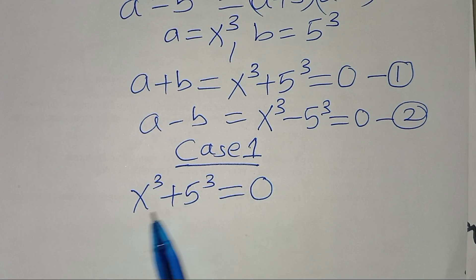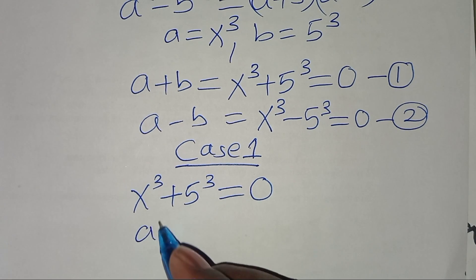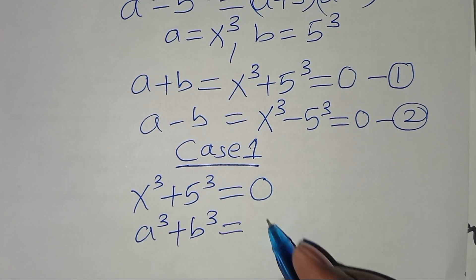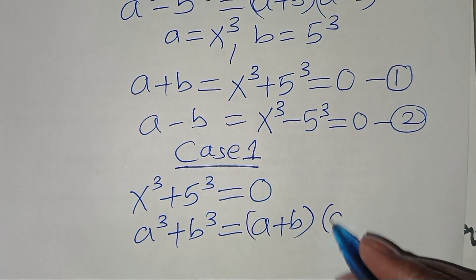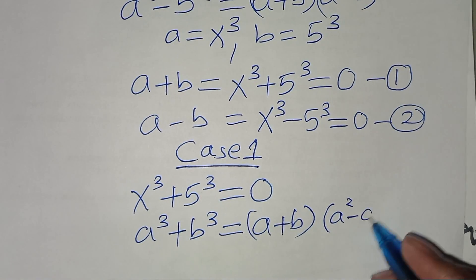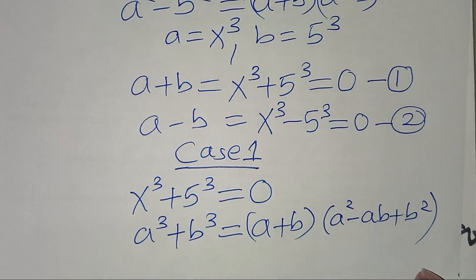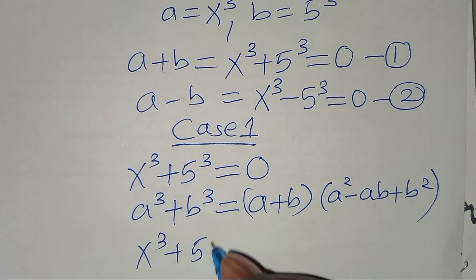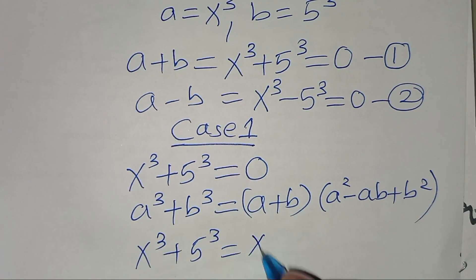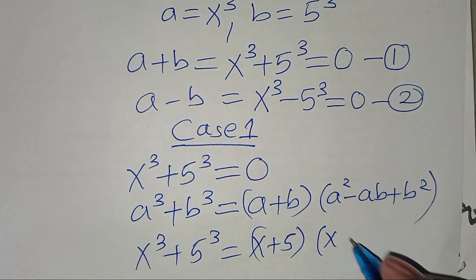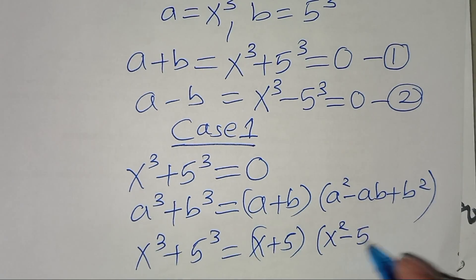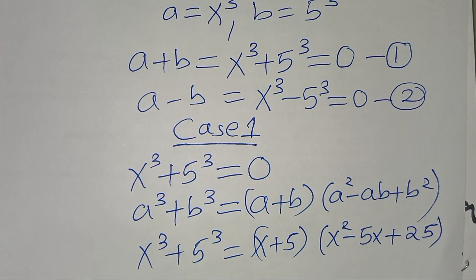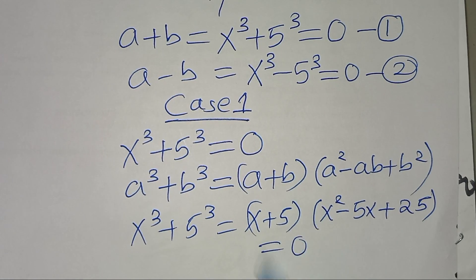This is the sum of two cubes, in the form a cubed plus b cubed, which can be expressed as (a + b)(a² - ab + b²). Applying this identity, x to power 3 plus 5 to power 3 becomes (x + 5)(x² - 5x + 25) equals 0.